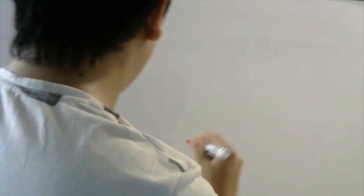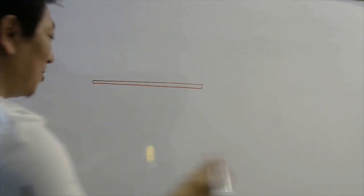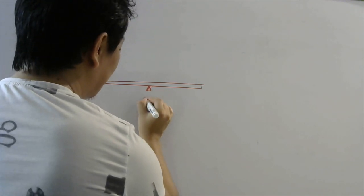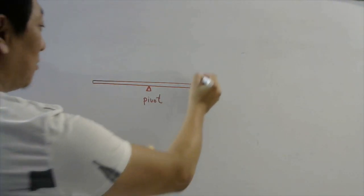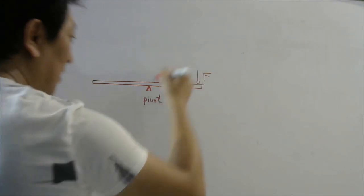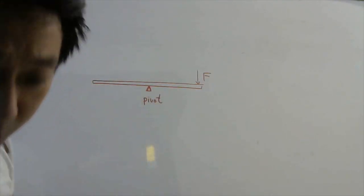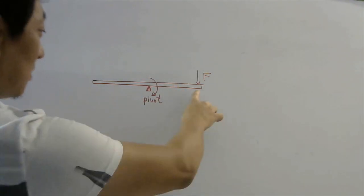To know which is right or wrong, let us first learn one concept in rotation. You all have played with a see-saw in your childhood days. Imagine this is the pivot — the point about which the board can rotate. Now if you apply a force by sitting on one side, your gravitational force will make the board rotate that way.